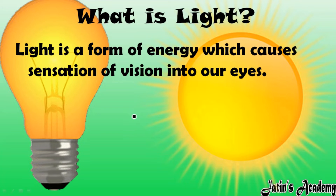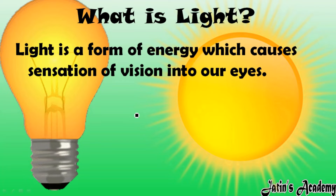For example, if you are entering into a dark room where there is no light — even though your eyes are open — you are not able to see anything. So light is that form of energy which enables us to see the objects present around us.